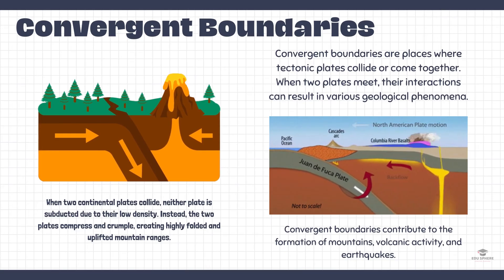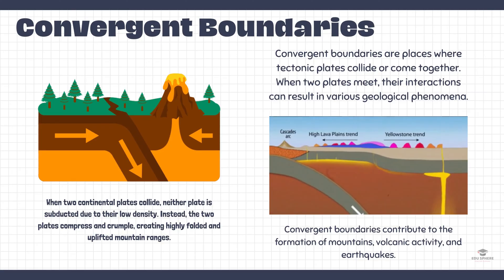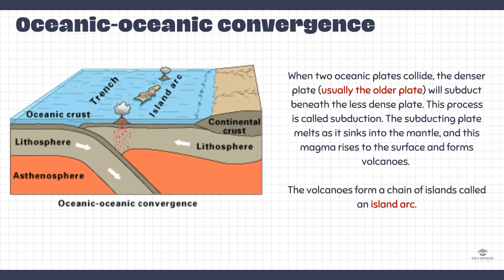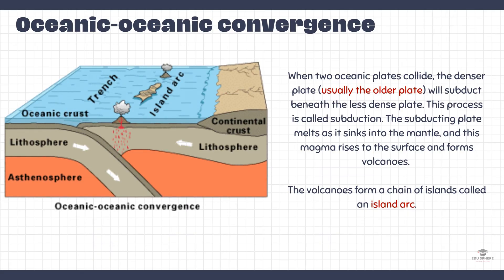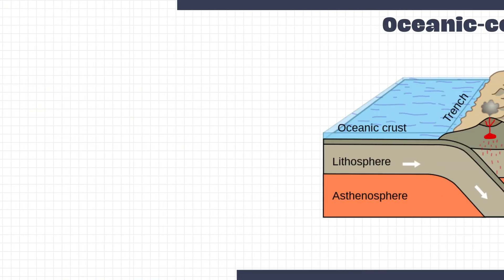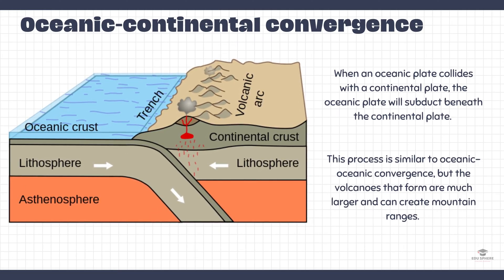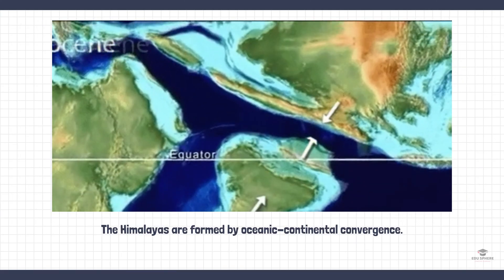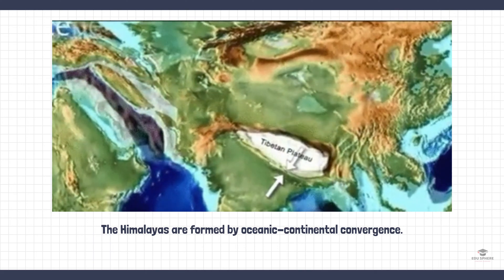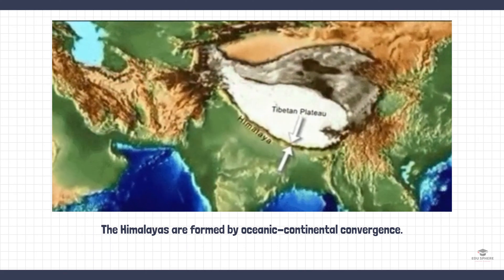A convergent plate boundary is a place where two tectonic plates are moving toward each other. This can happen in two ways. The first is oceanic-oceanic convergence: when two oceanic plates collide, the denser plate will subduct beneath the less dense plate. This process is called subduction. The subducting plate melts as it sinks into the mantle, and the magma rises to the surface and forms volcanoes, leading to the formation of a chain of volcanic islands called an island arc. The second type is oceanic-continental convergence: when an oceanic plate collides with a continental plate, the oceanic plate subducts beneath the continental plate, and the volcanoes that form can create much larger mountain ranges. The Himalayas are an example of a mountain range formed by oceanic-continental convergence.